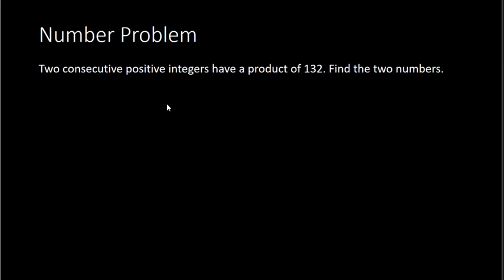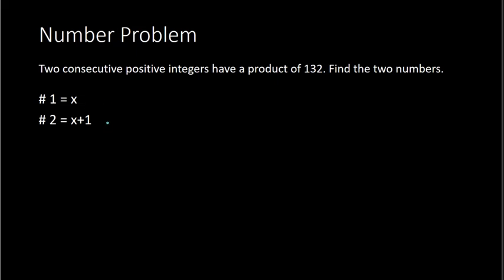To begin, you want to establish your variables. We have two different numbers, and these numbers are consecutive positive integers. The first number we can call x. And if the first number is x, then the next number is going to be x plus 1, because that is how you find the next consecutive number. So if the first number was 5, the next consecutive number would be 1 more than that, which would be 6. We don't know what those numbers are, but we do know that if the first one is x, the next one is found by adding 1 to that first number.